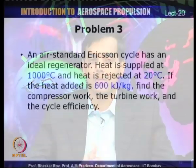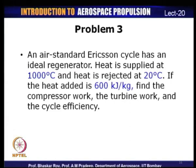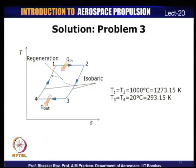The third problem is on an Ericsson cycle. Problem 3: An air standard Ericsson cycle has an ideal regenerator. Heat is supplied at 1000°C and heat is rejected at 20°C. If the heat added is 600 kJ/kg, find the compressor work, turbine work, and cycle efficiency.